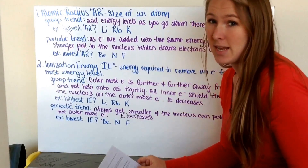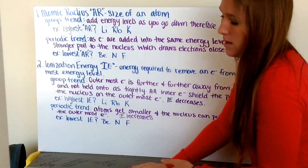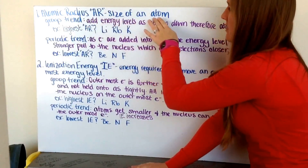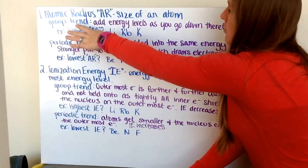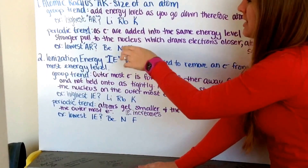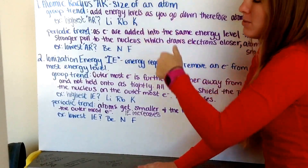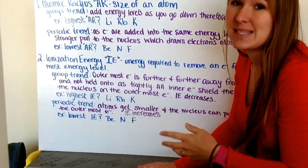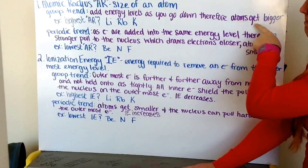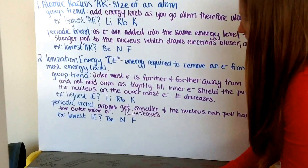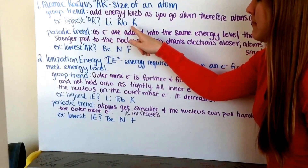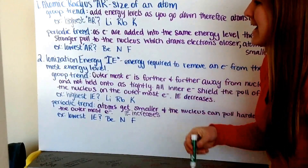Referring back to my sketch, because that really holds all the answers, I'm first going to discuss atomic radius, abbreviated as AR, which is the size of my atom. My group trend: as I go down my group and add energy levels, notice that lithium only has two energy levels while cesium has six — it's gotten huge as I go down. Therefore, my atom gets bigger as I add more and more energy levels to it.